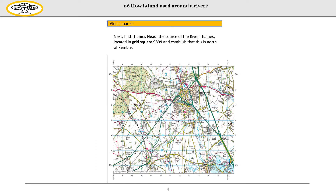For this activity, we need to find Thames Head, the source of the river Thames, located in grid square 9899. That is to the north of Kemble. So again, find 98 along the bottom line — we've already looked at that, so we know where that square is. Now we need to find 99 on the y-axis. If you go to 99, you can see it there.